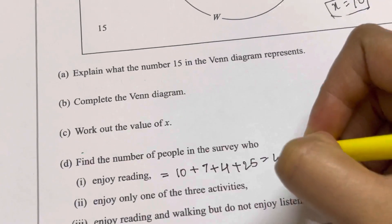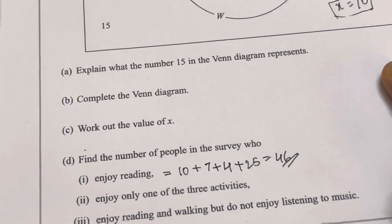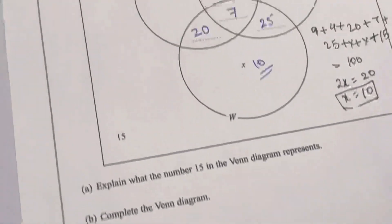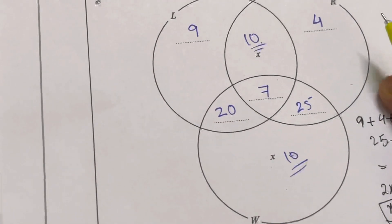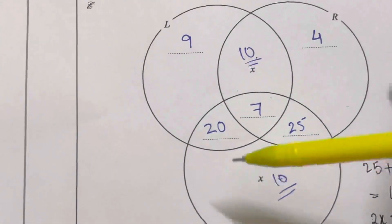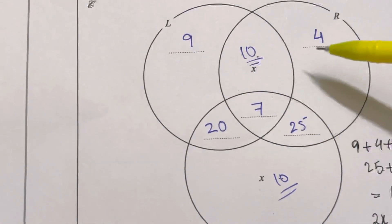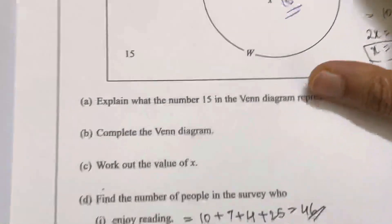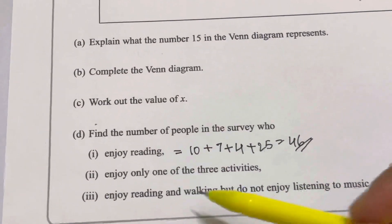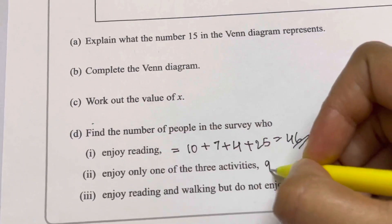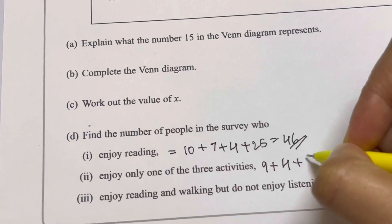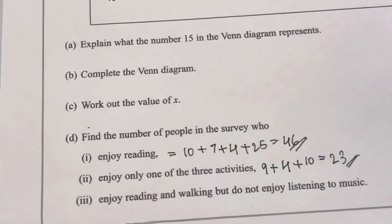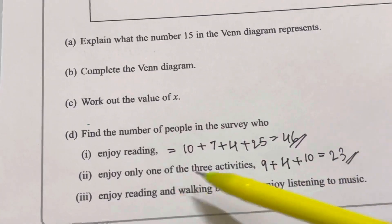That equals 46, so 46 people enjoy reading. Next, finding those who enjoy only one of the three activities: 9 enjoy only music, 4 enjoy only reading, and 10 enjoy only walking. Adding those together: 9 + 4 + 10 = 23 people enjoy exactly one of the three activities.